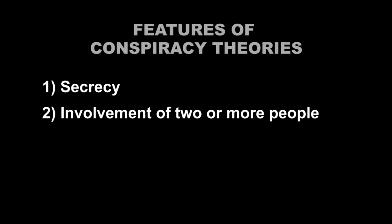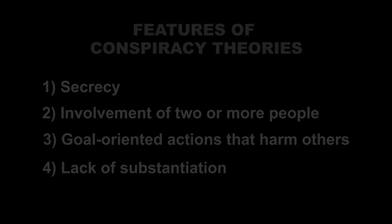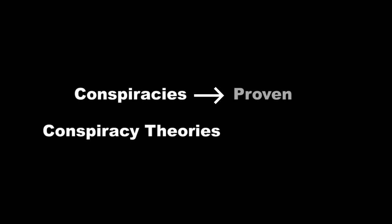This latter definition is the definition I'll be using in this series. These features - secrecy, the involvement of two or more people acting, the goal-oriented actions that harm others, and lack of substantiation - are all necessary features of conspiracy theories. Again, to be sure, conspiracies do occur, but I'll refer to those simply as proven conspiracies, whereas the unsubstantiated explanations that contradict the bulk of the evidence will be referred to as conspiracy theories.